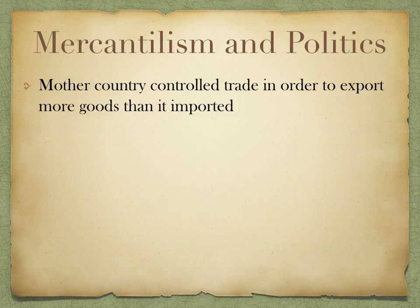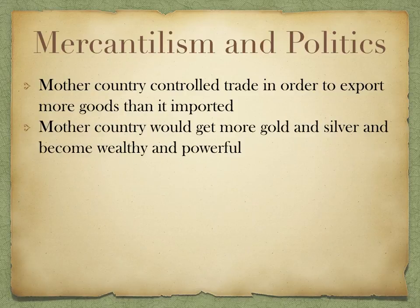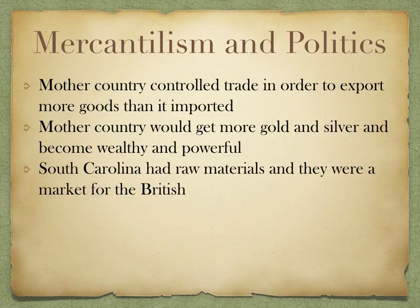The mother country controlled trade in order to export more goods than it imported. The mother country would get more gold and silver and become wealthy and powerful if they were able to export more than they imported. South Carolina had raw materials and was a market for the British. Once South Carolina grew the raw materials and sent them to Great Britain, Great Britain would turn them into something and sell it back to the South Carolinians — they became a market.